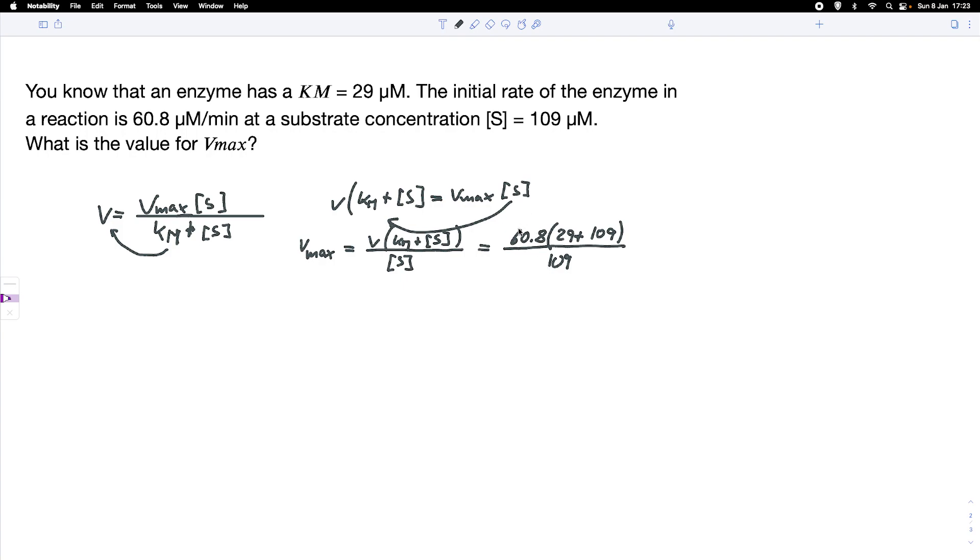What about the units? For the initial rate, we've got micromolar per minute, and for the concentrations we've got micromolar. The micromolars cancel out and we get the unit micromolar per minute.